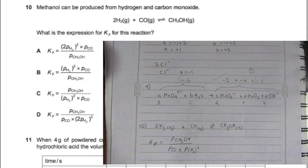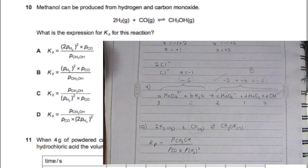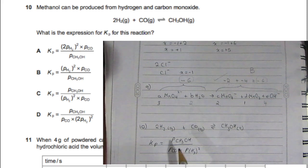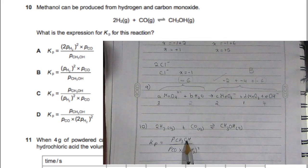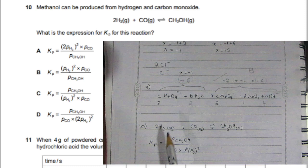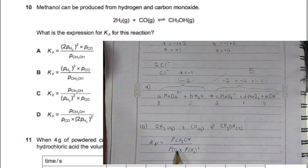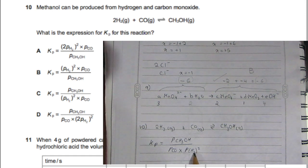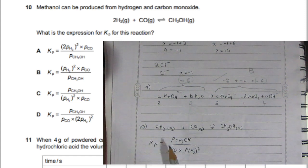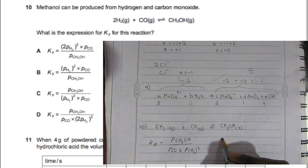For question ten, Kp: the products go on top and the reactants on the bottom. So it's P(CO) times P(H₂), and because it's 2 moles of H₂, it's squared — if it were 3 moles it would be cubed. So the answer is C.